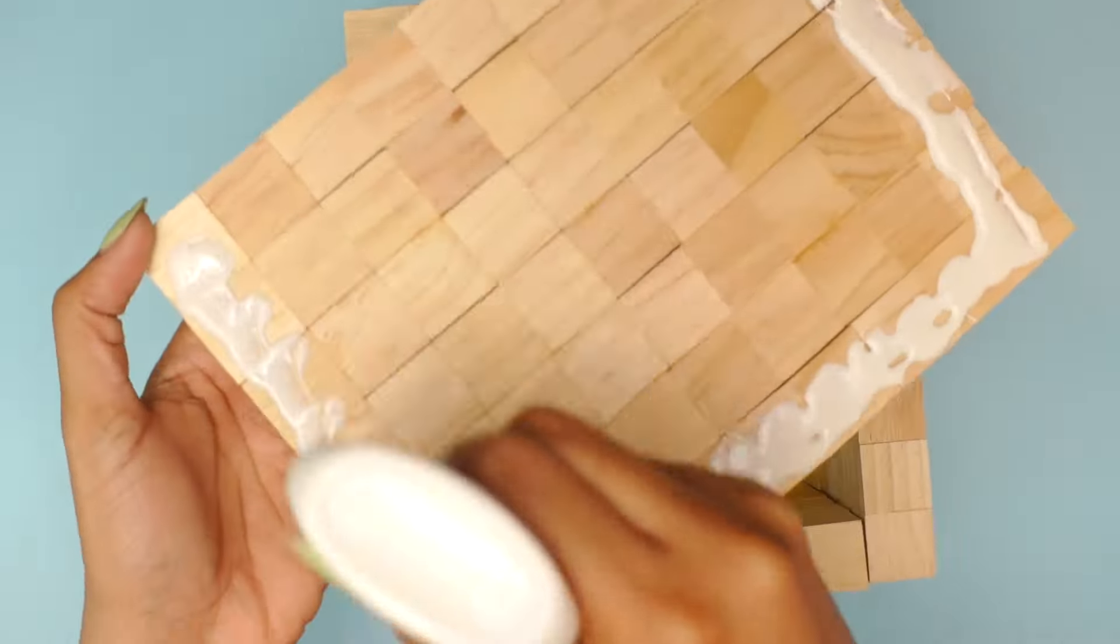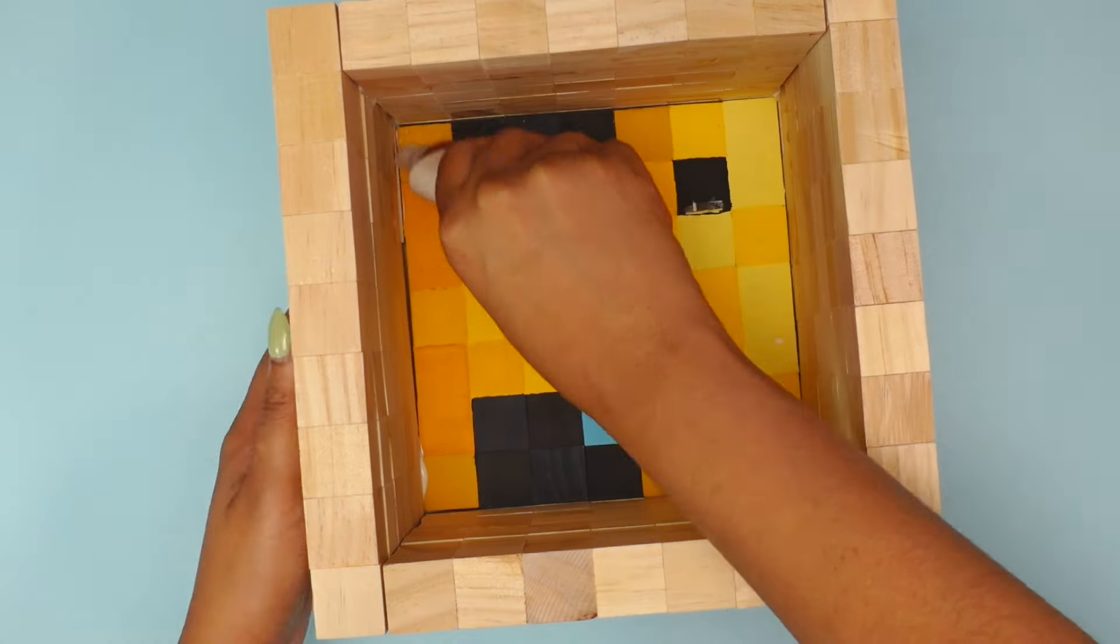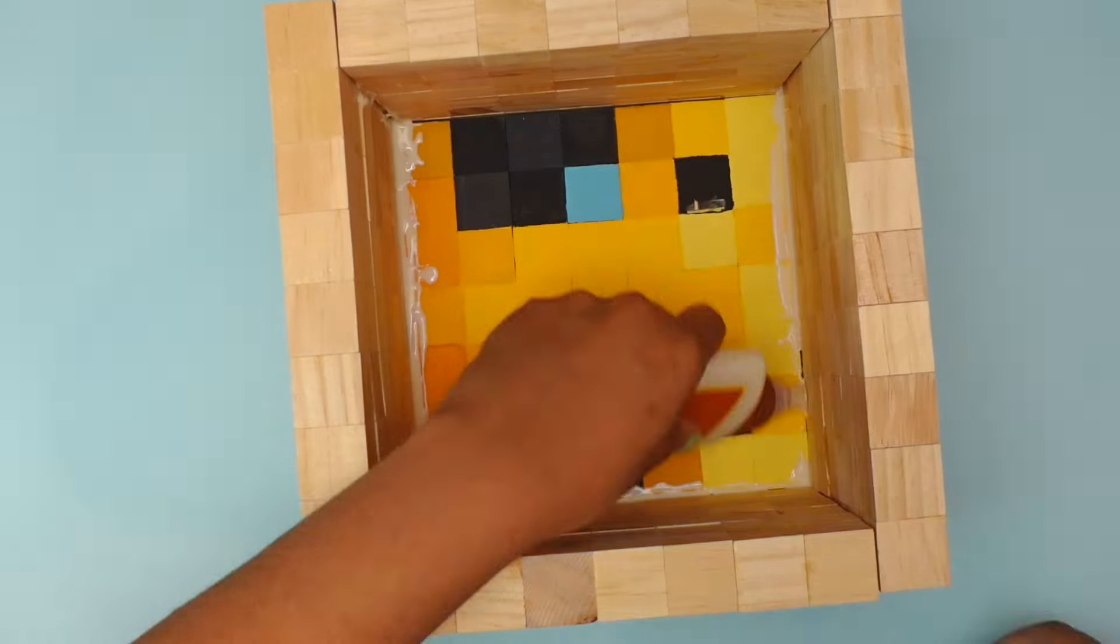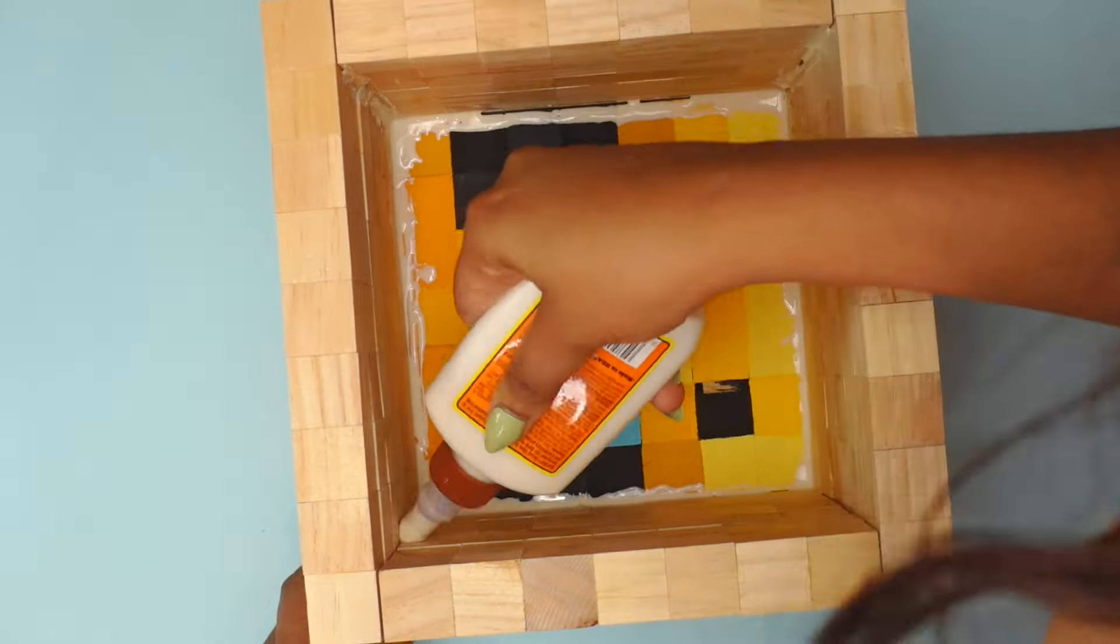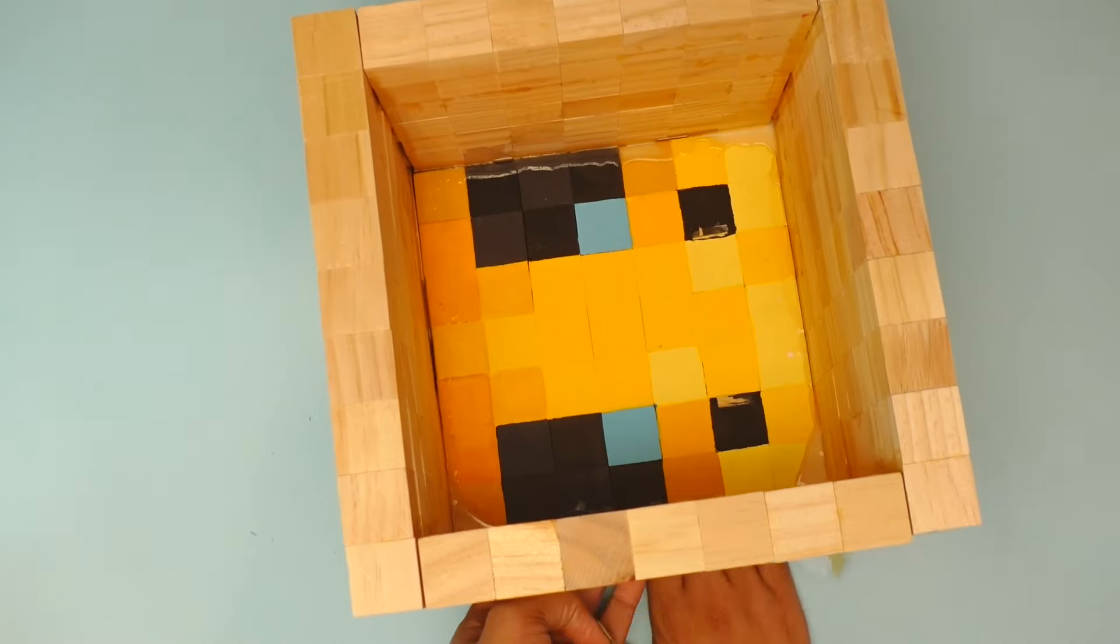It looked kind of weird to me, but I thought the whole game is square so it must be right. I figured once I was done painting it, it would all come together. So I glued down the sides using tons of glue to make sure it was sturdy. I came back the next day and it was completely stuck.